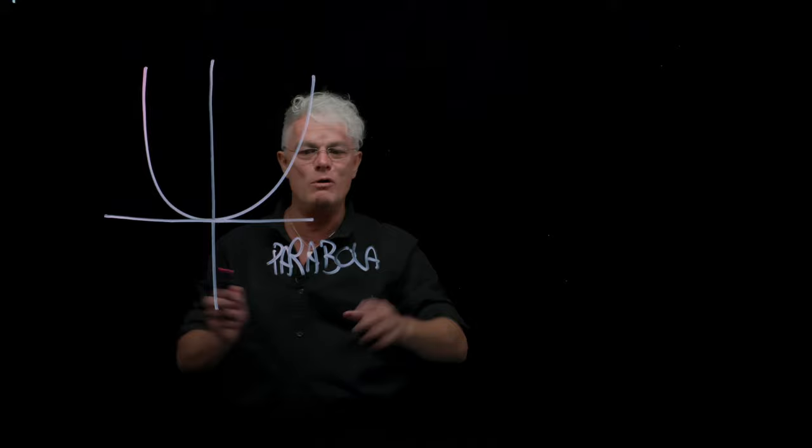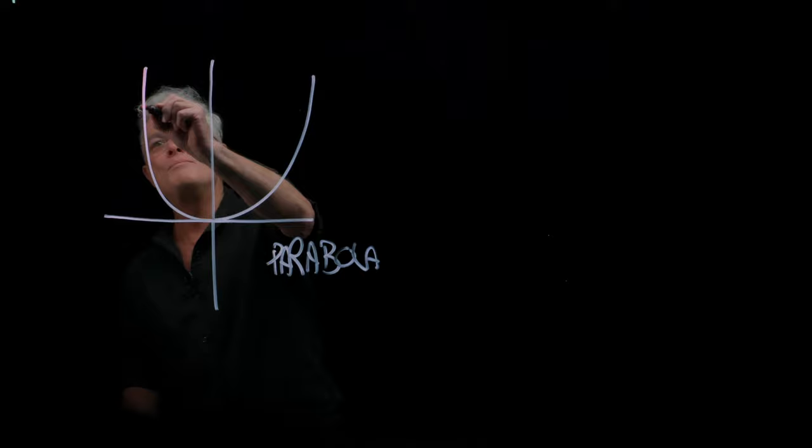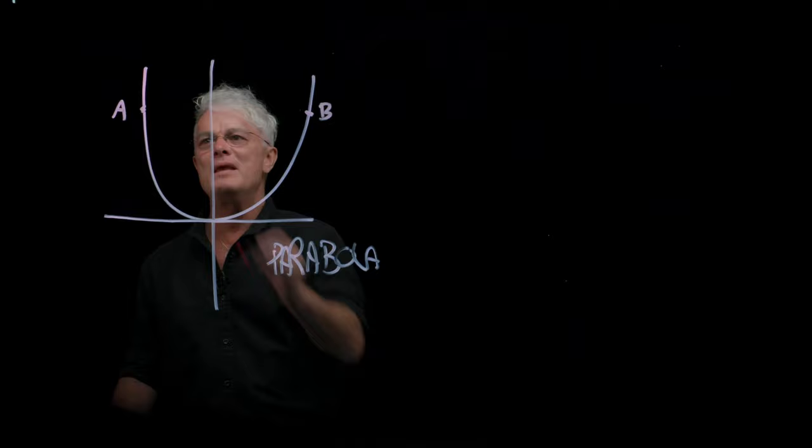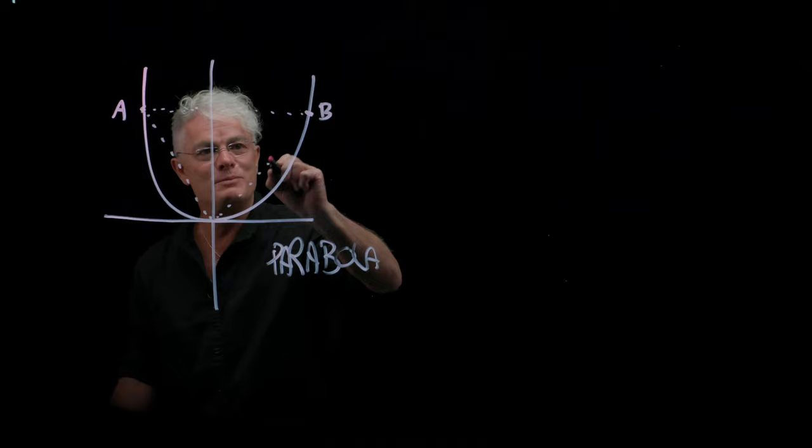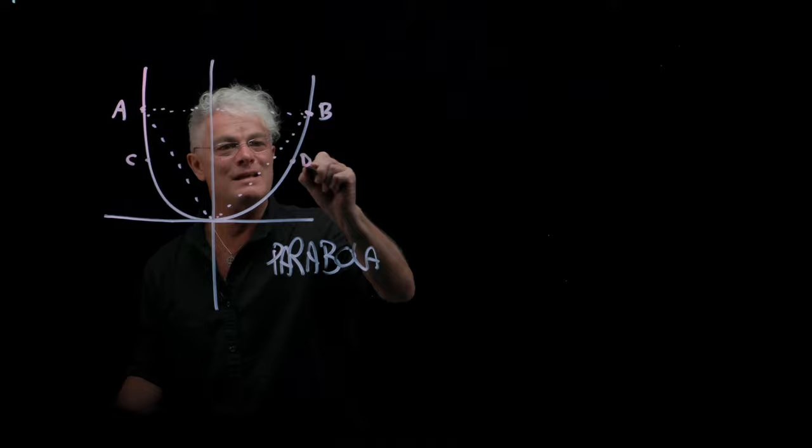So for a parabola, you have point A corresponding to point B. Piece of cake, right? Same distance to that center line. Same distance down to that particular point. This side corresponds to that side in equal manner.